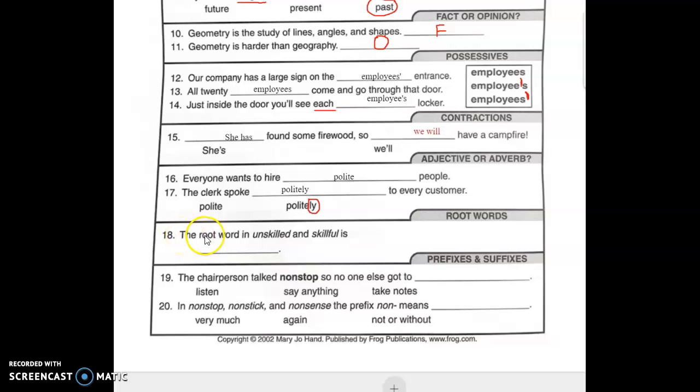Number 18. The root word in unskilled and skillful is. Well, remember that a root word is the word at the center that has the most meaning. In both of these words, the root word is skill. Unskilled and skillful. Both have the root word skill. Right there. I just have prefixes and suffixes around them.